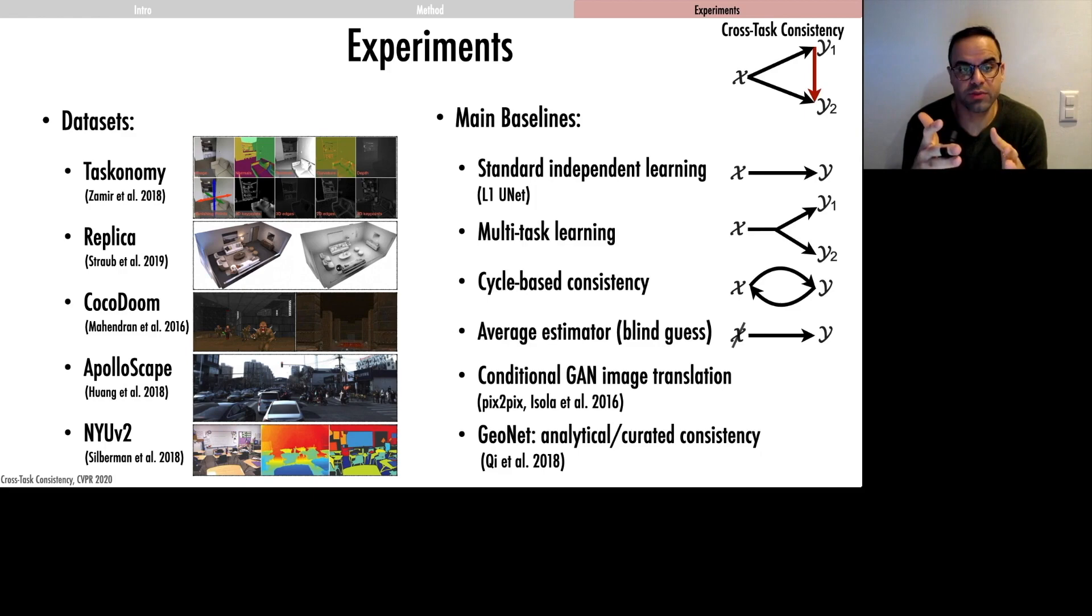And average estimator control baseline. We also compare with conditional GAN models and GeoNet, which is an example of curated consistent learning based on known analytical relationships.